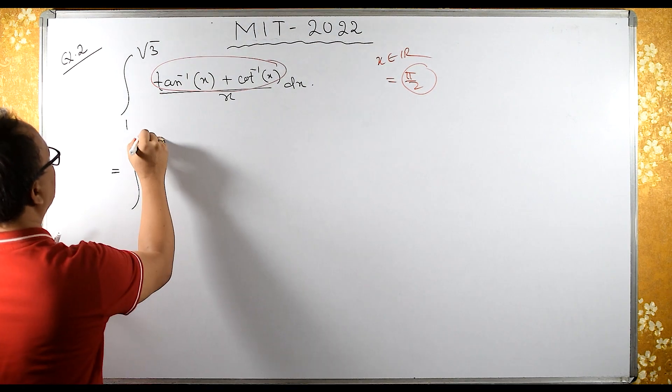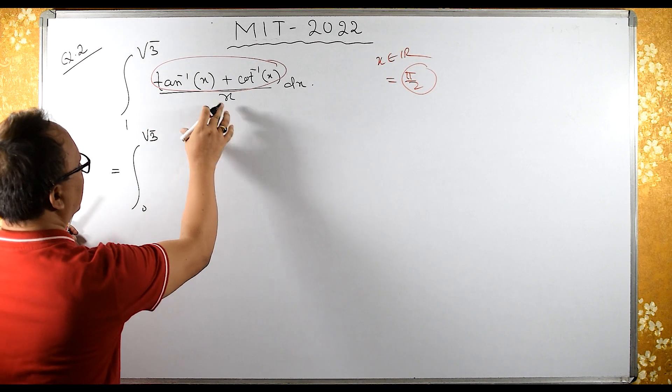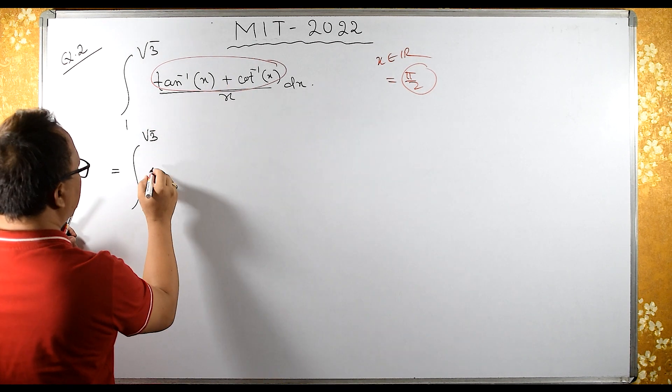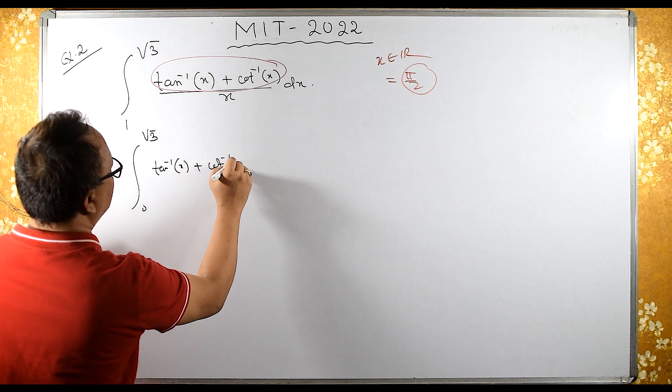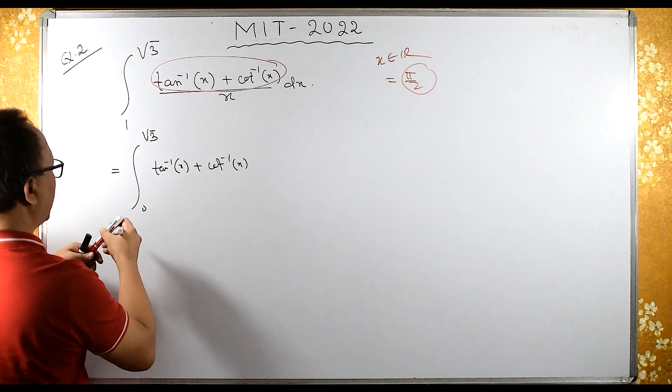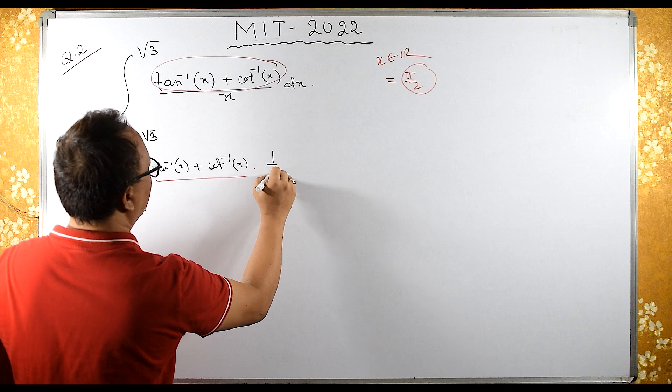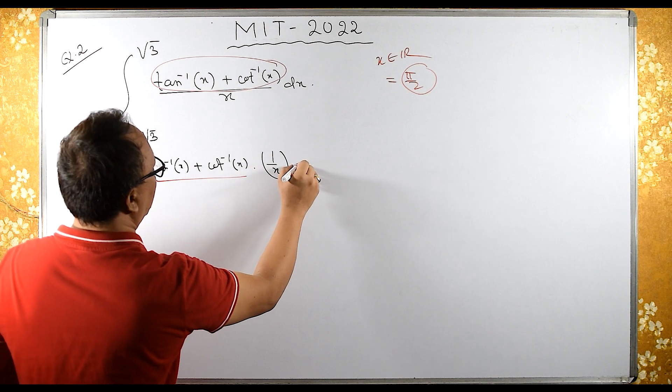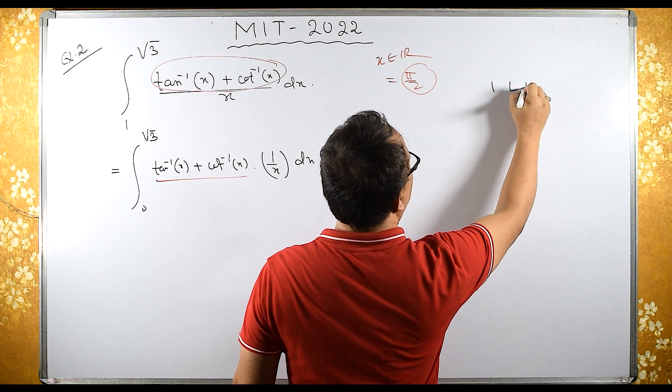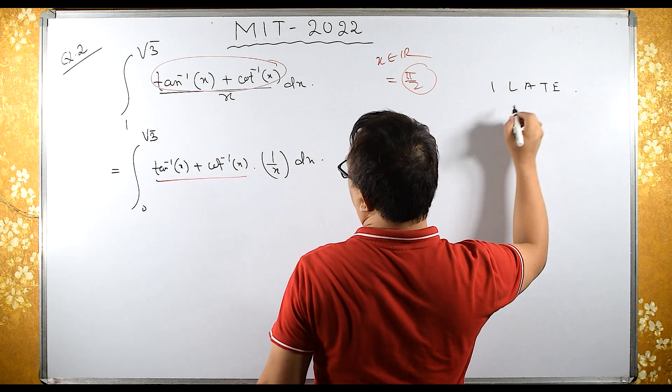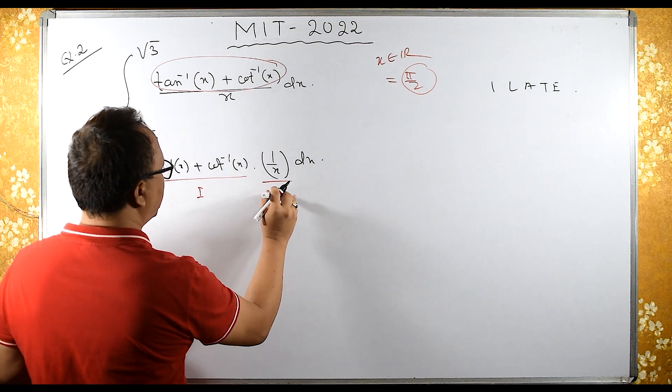It can be written as from 0 to root 3. I will consider tan inverse x plus cot inverse x as the first function, times 1 by x dx. I will use integration by parts, where this is the first function and this is the second function.